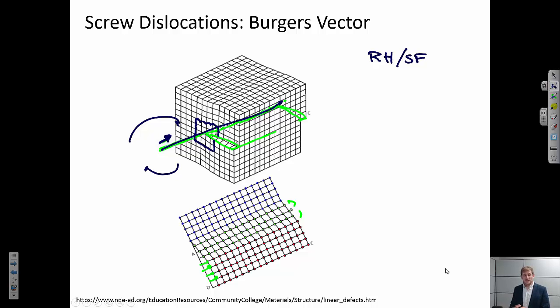If there was no dislocation there, I would have four unit cells on the side. It would be a loop and I would come back to the same place. But now you can tell my start point here is different from my finish point here.